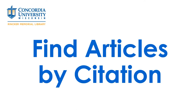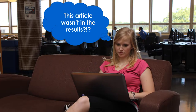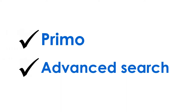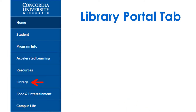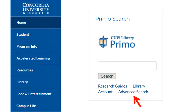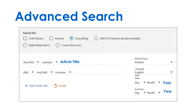Here's a quick tutorial on finding articles by citation. Did you try searching for the article by title in Primo? Use the advanced search on the library tab in portal. Search for the full article title and year in the everything search.